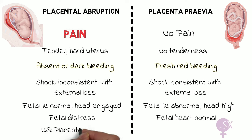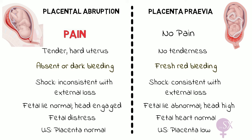On ultrasound, the placental location will be normal in placental abruption and low in placenta previa. Keep in mind that most of the time an abruption cannot be identified on ultrasound, so the diagnosis of placental abruption is a clinical one. This is very important to know and comes up quite a lot during exams.